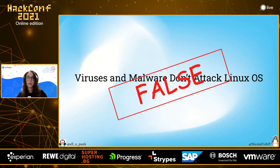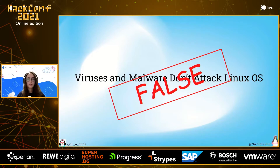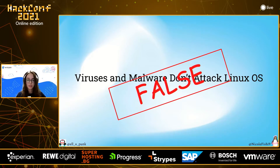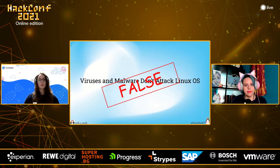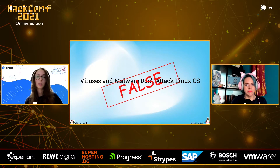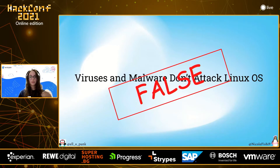Other attacks include botnets such as Kaiji, and we also see ransomware attacking Linux. For example, we have REvil, which is an interesting case because it shows how attackers understand they have ransomware for Windows and, as they want to target Linux, they shift their focus and add Linux to their arsenal. Some attackers create new threats from scratch, while others redesign existing malware to target Linux as well.